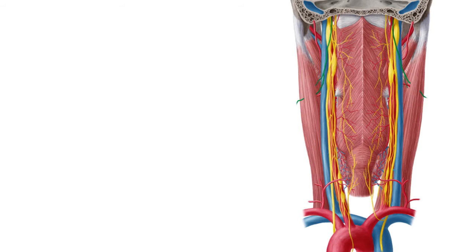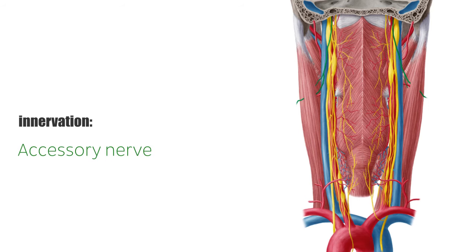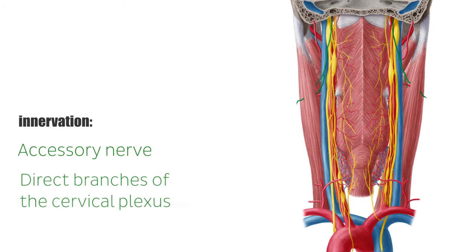The sternocleidomastoid is innervated by the accessory nerve and by direct branches of the cervical plexus.